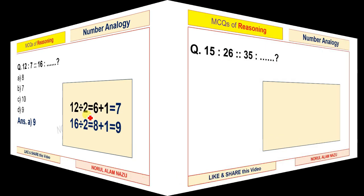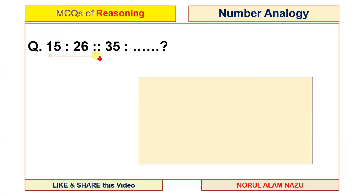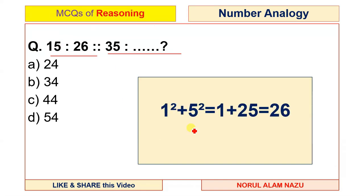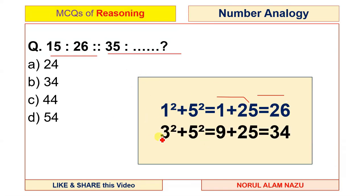Next question: 15 is to 26, 36 is to what? 1 squared equals 1, plus 5 squared equals 25; 1 plus 25 equals 26. Now for 36: 3 squared equals 9, plus 5 squared equals 25; 9 plus 25 equals 34. So option B, the answer is 34.